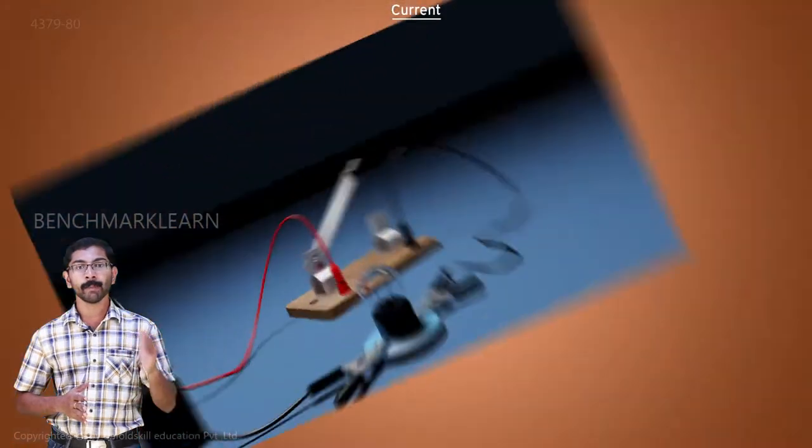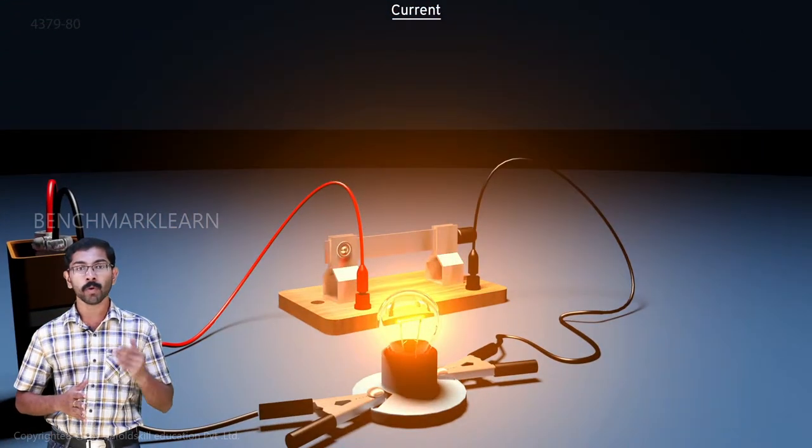When we connect a battery to the lamp, the battery will force all the electrons to move from anode to cathode.